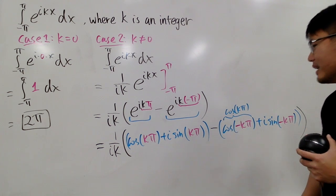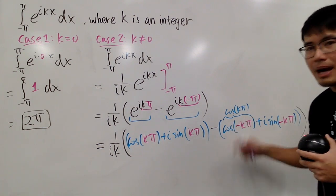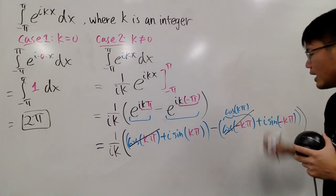The negative doesn't do anything, right? So, you have cosine k pi minus cosine k pi. In another word, this and that cancel out nicely.